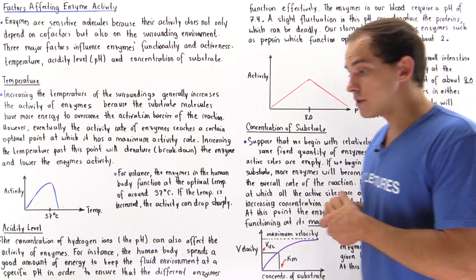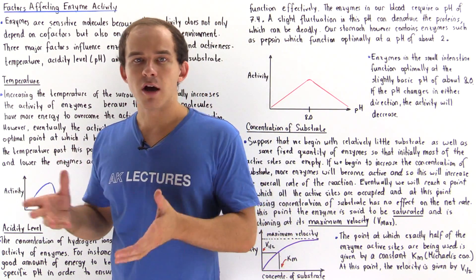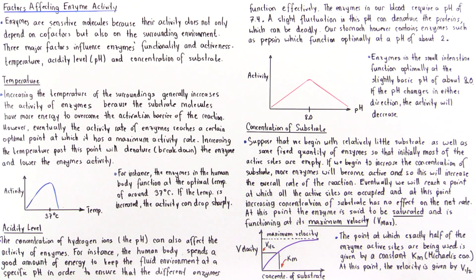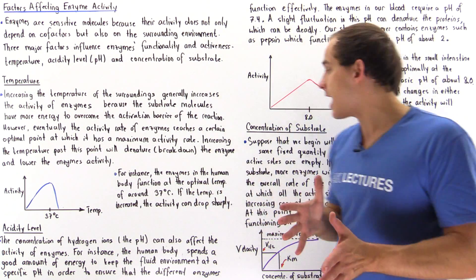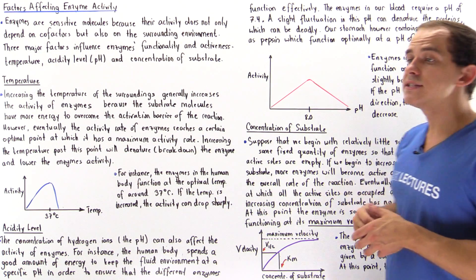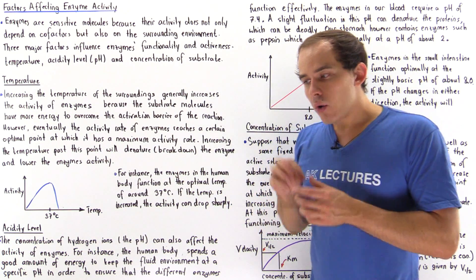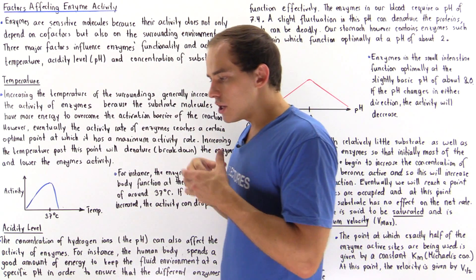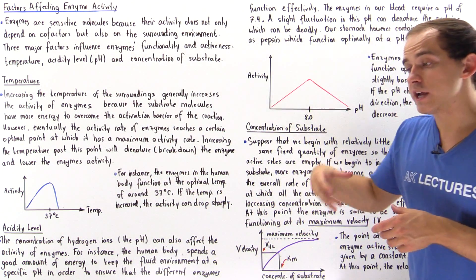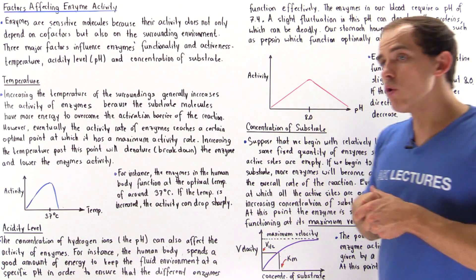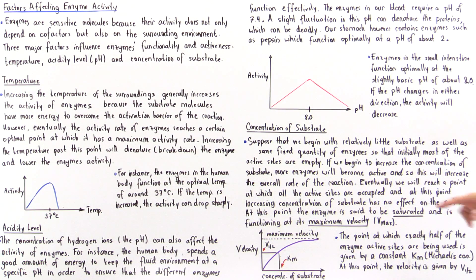The final factor we want to discuss is the concentration of the substrate. Suppose we begin with a relatively small quantity of substrate and a fixed amount of enzyme. Initially, most of the active sites on our enzymes are actually empty. As we begin to increase the concentration of substrate, more and more of the active sites will be occupied, and that will increase the overall rate of our reaction.